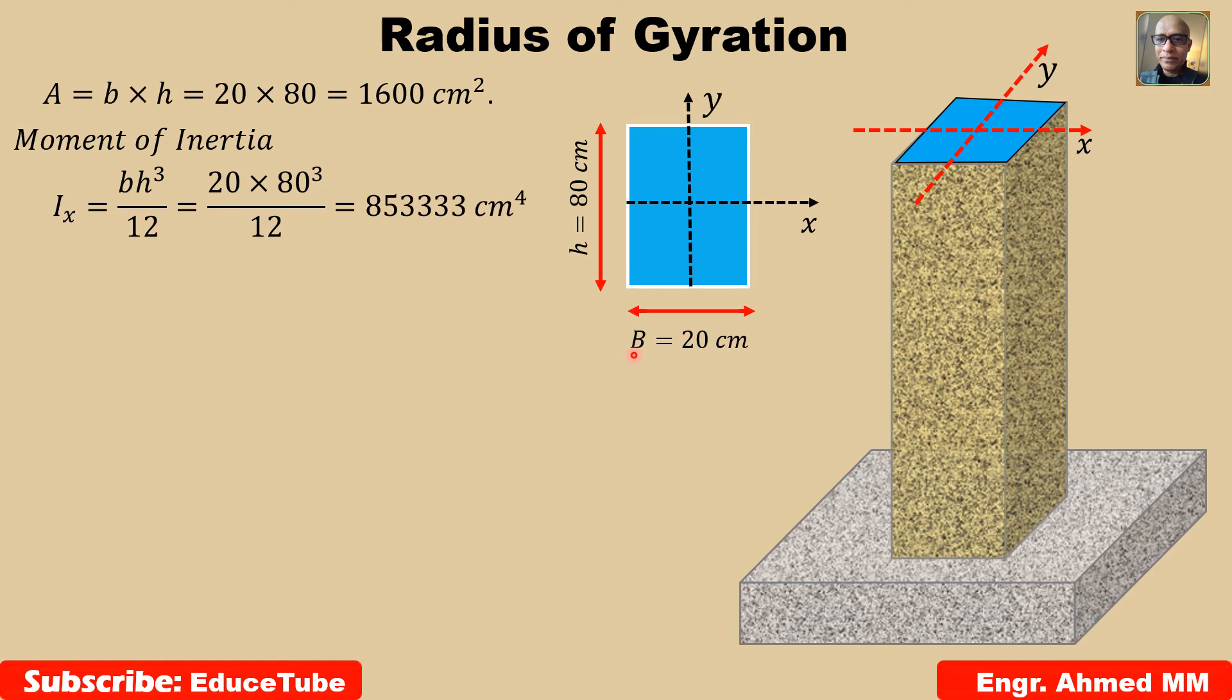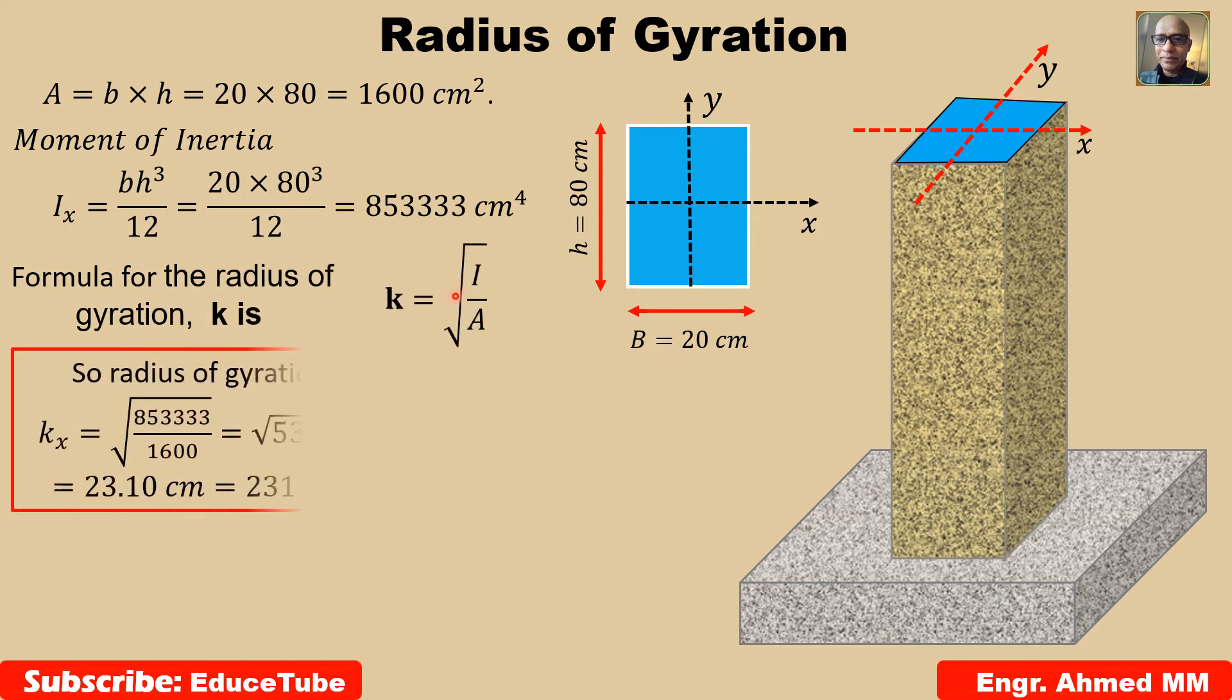Formula for the radius of gyration, k, and it is this one. Already we learned it. So, radius of gyration, we can put the value for i and a. Already we know these two. So, easily we can get centimeter. Then, we can convert it to millimeter. It will be 231 millimeter.